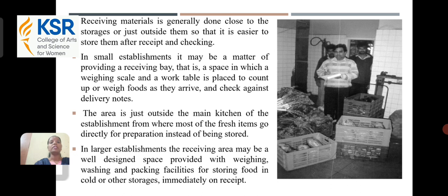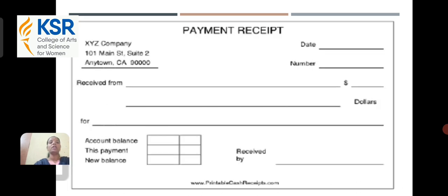The receiving area is just outside the main kitchen of the establishment, from where most of the fresh items go directly for preparation instead of being stored. In larger establishments, the receiving area may be a well-designed space provided with weighing, washing, and packing facilities for storing food in cold or other storage immediately upon receipt. This is an example of a pavement receptor.